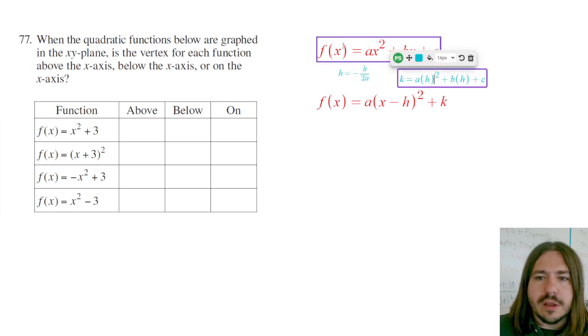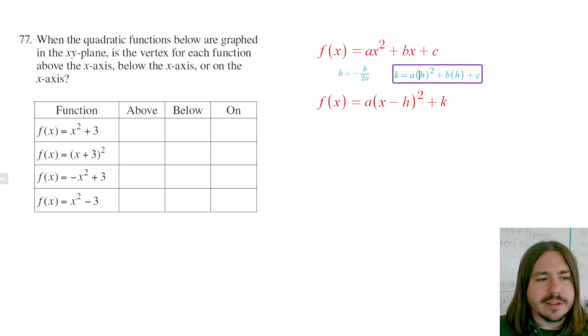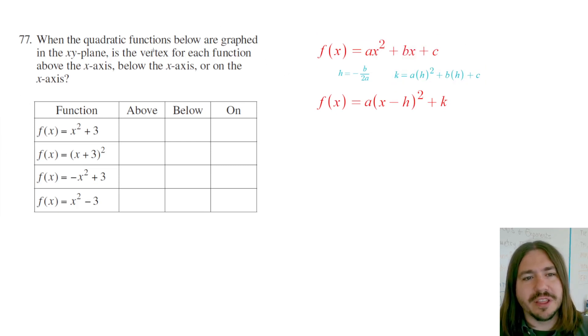Now, vertex form, it's a lot easier to find the vertex. And let me just take a minute and back up a second, because I'm talking about this point, the vertex, and I haven't really described what that is. So whenever you graph a quadratic function, which is one that has an x squared, notice all these have x squareds.